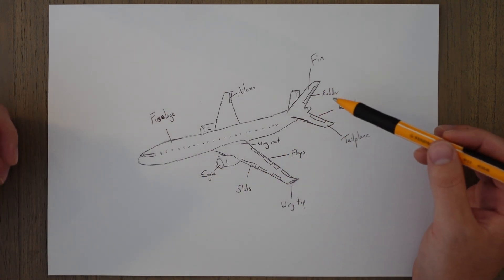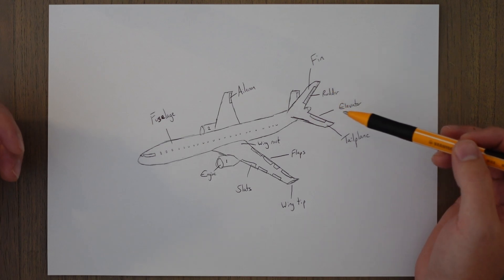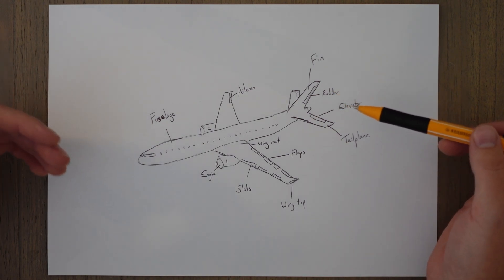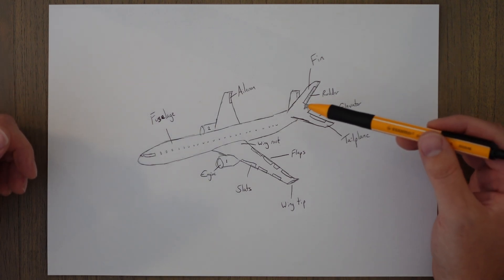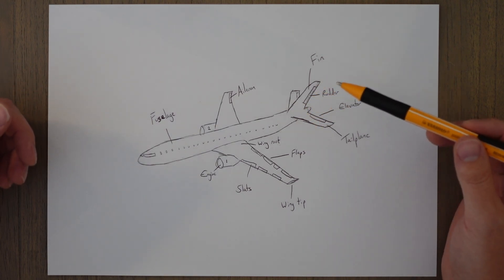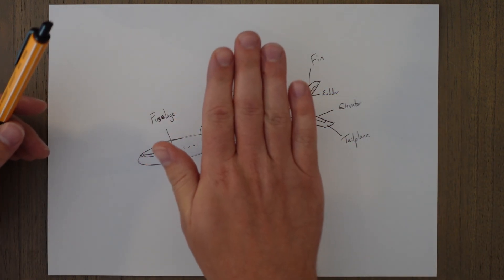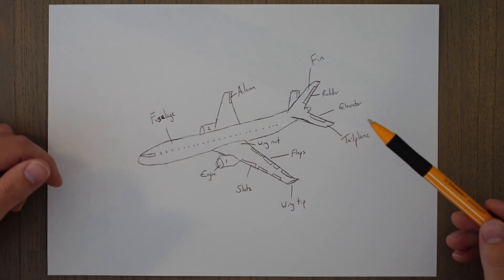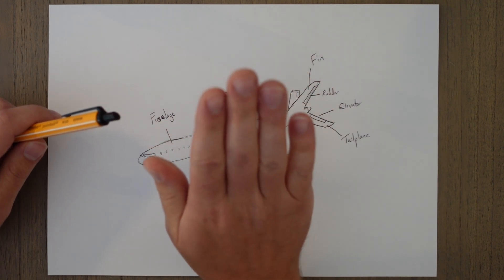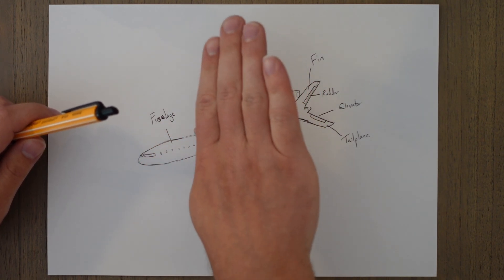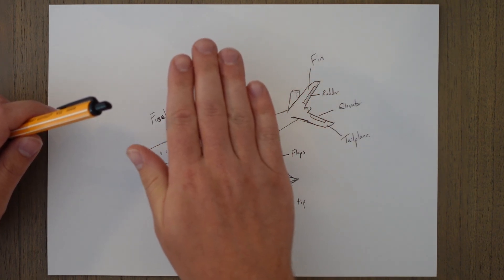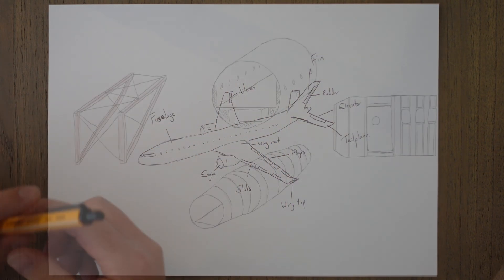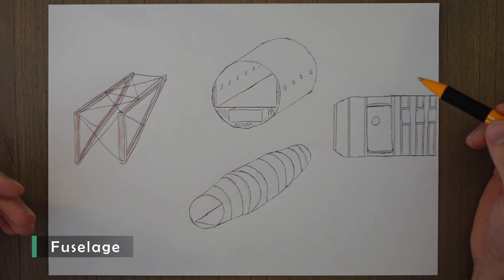At the back you've got the tail assembly, which is sometimes called the empennage, though I've never heard anybody call it that. You've got the fin which is the vertical bit and the rudder which controls yaw. Then you've got the tail plane and the elevator which controls pitch. So you've got ailerons for roll, rudder for yaw, and elevator for pitch. The fuselage is the big bit where we carry passengers, cargo and crew.